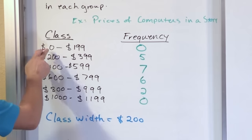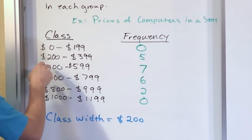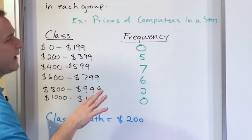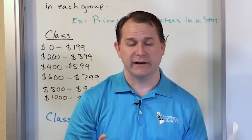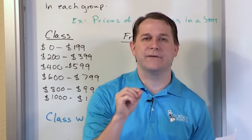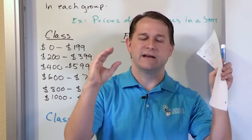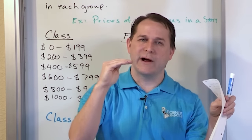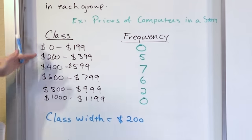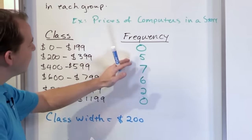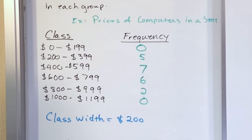In a frequency distribution, the class width should be the same for every class. You don't want classes of different widths like $0 to $199, then $200 to $700, then $701 to $900. You want all class widths to always be the same, so that when we put our frequency numbers down, we can compare one class to another and draw conclusions — and that's what this is for.